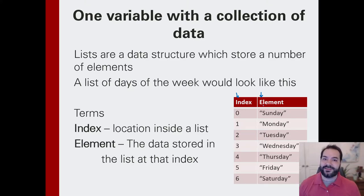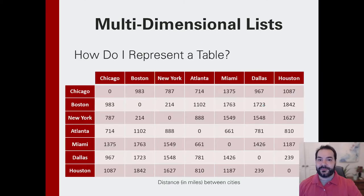But when we're dealing with nested lists, we're dealing with a lot of data. And a really great way to think about this is how would I represent a table? If we look at this table of miles between each one of these cities, to get from Chicago to Atlanta is, roughly speaking, 714 miles, give or take.